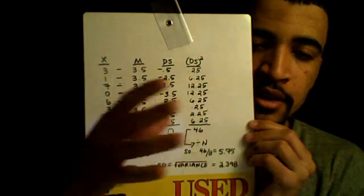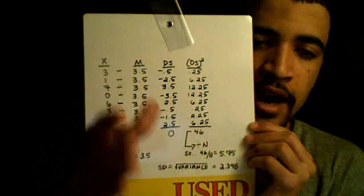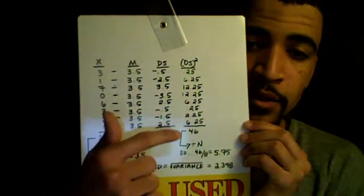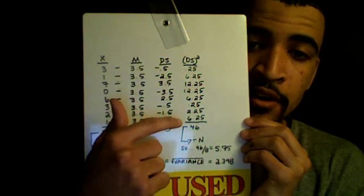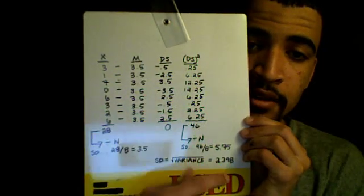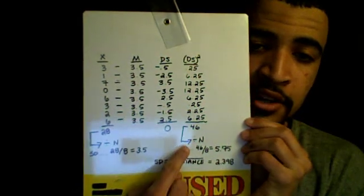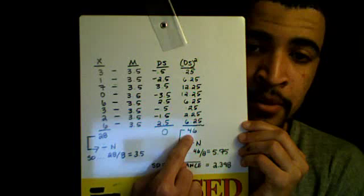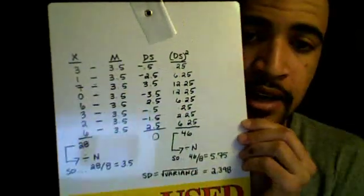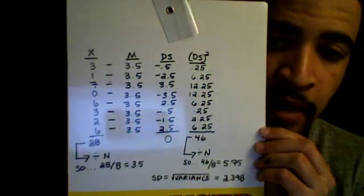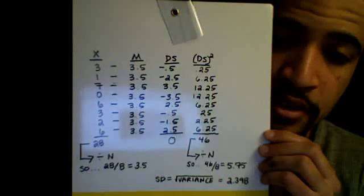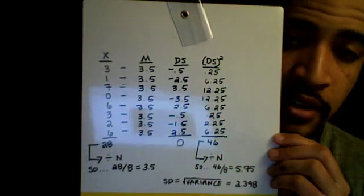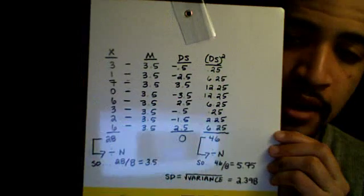So 46 is the sum of squares, and your next step is to divide by N — just the number of values, which is 8 — just like you did for the mean. So 46 divided by 8 gives you 5.75. The 5.75 is the variance. That is the one number representing the spread away from the mean.